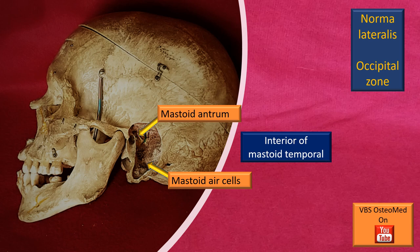The suprameatal triangle is an important surgical landmark because you can go through it to reach the mastoid antrum, which is the entrance point from the middle ear cavity to the rest of the mastoid air cells. It serves as a portal or entrance area.